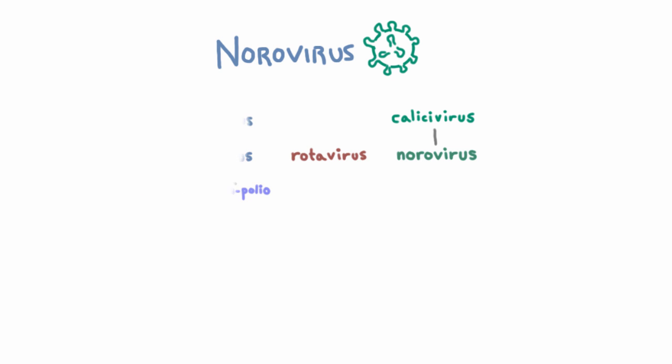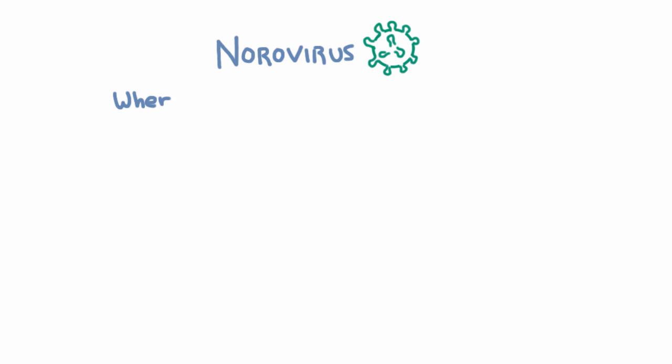So let's talk about how it presents. First of all, people love to talk about where norovirus presents. They always talk about cruise ships as a common site. There have been some publicized outbreaks at Chipotle's, not as publicized outbreaks in the military, schools, nursing homes. And the bottom line really is that norovirus is absolutely everywhere. It's good to know about cruise ships for exam purposes, but in the real world it's everywhere. Bathrooms, doorknobs, you name it.